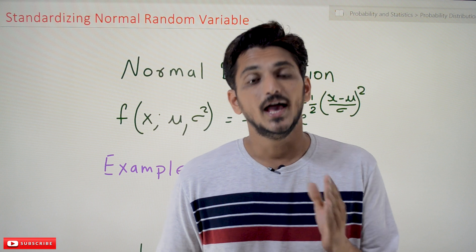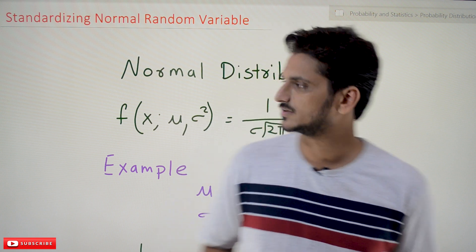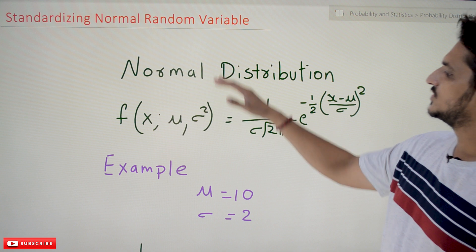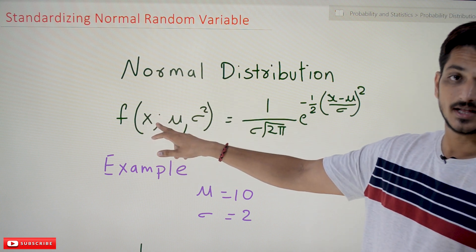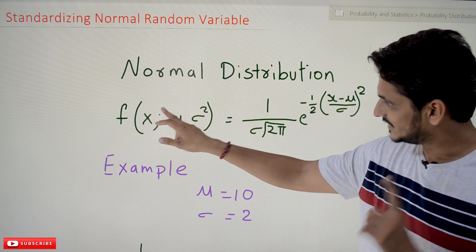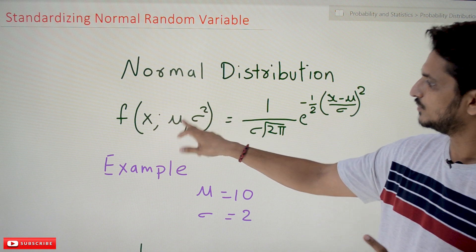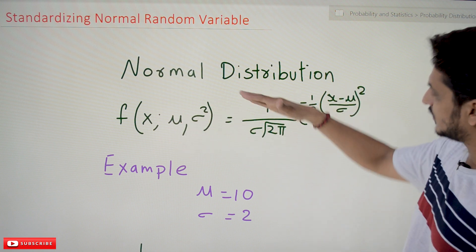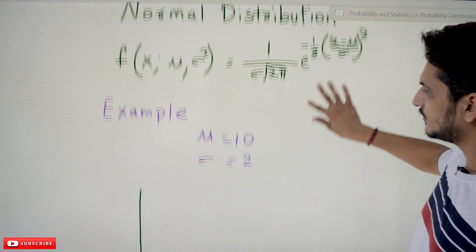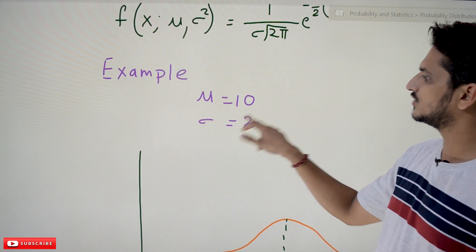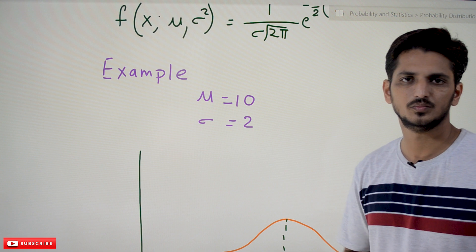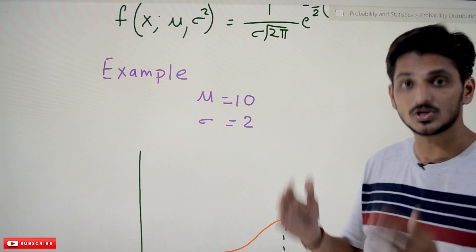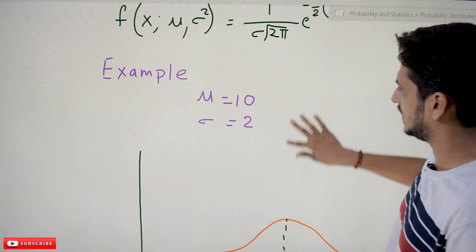Coming to today's class — let's take a normal distribution f(X). We call the random variable X. For normal distribution, μ and σ² are given, and this is the equation for the normal distribution. Taking an example where μ = 10 and σ = 2, let's look at how our normal distribution looks like with a graphical visualization.